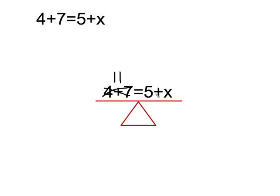So to get this one alone, I need to get this 5 to get off. So I'm going to subtract 5 from this side. Now to be fair, if I subtracted 5 from one side, if I want to keep my teeter-totter balanced, I need to subtract 5 from this side as well.